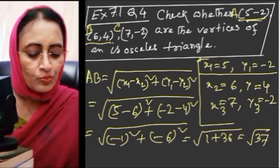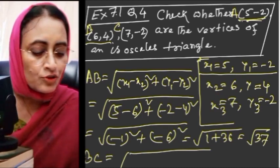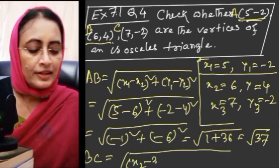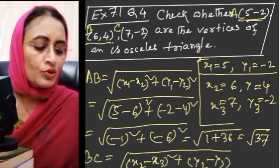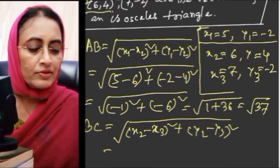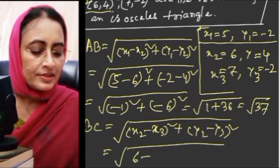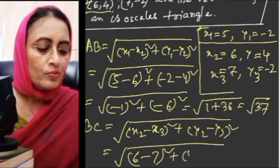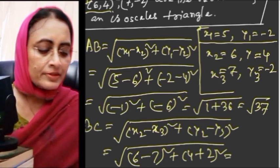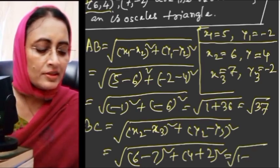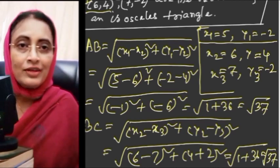BC = √[(x2 - x3)² + (y2 - y3)²] = √[(6 - 7)² + (4 - (-2))²] = √[(-1)² + (6)²] = √[1 + 36] = √37.